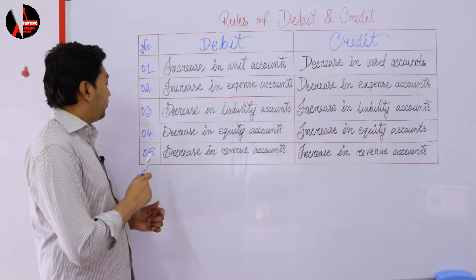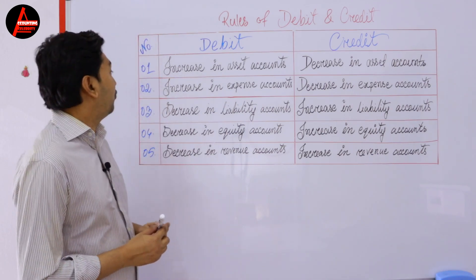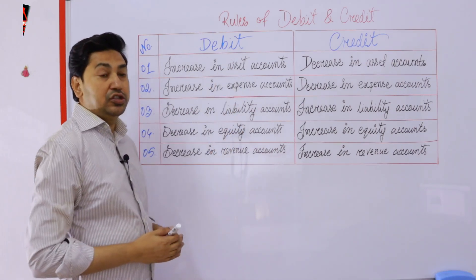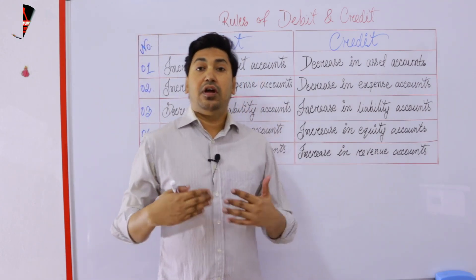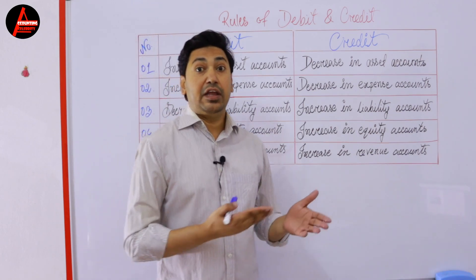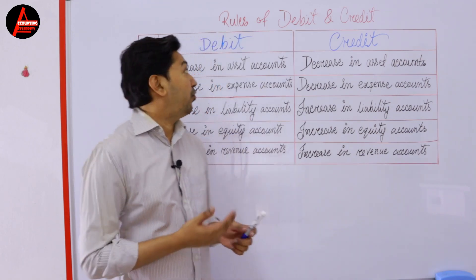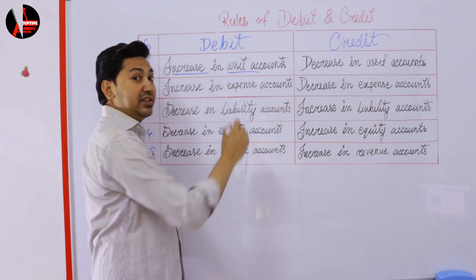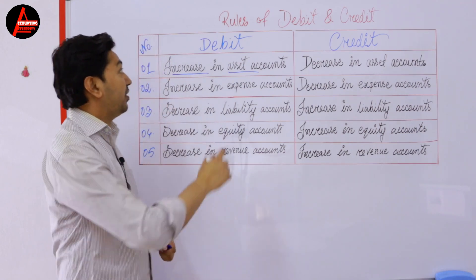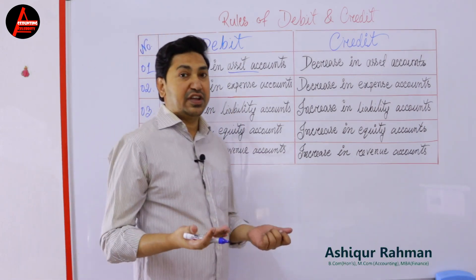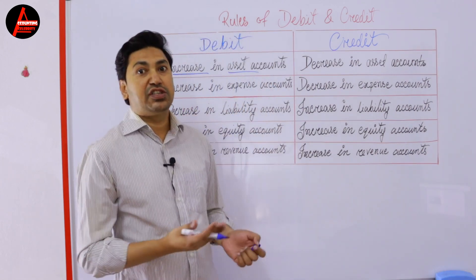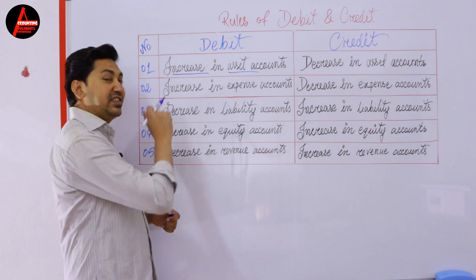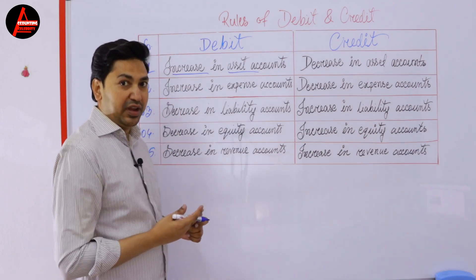Here we have five rules for debit and credit. Rule one: increase in asset account is debit. What is an asset account? Like furniture, machinery, land and building, equipment — these are asset accounts. What does this rule say? It says increase in asset account. If you see that your asset increases, your asset will be debited. For example, you purchased a machine in cash. Machine is an asset, so machine is increasing here, so machine account will be debited.